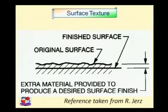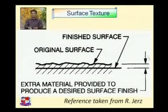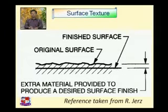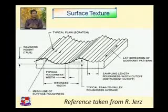This is the finished surface drawn by the black colored line, and the wavy surface is the original surface. The extra material shown is provided to produce a desired surface finish. Before machining, the actual surface is the original wavy line; after machining, the result is the finished surface. This is another example of surface texture, with some important terminology.